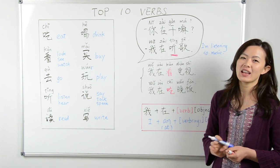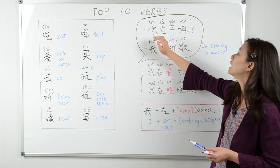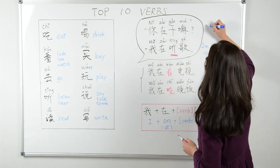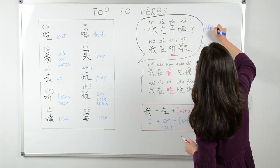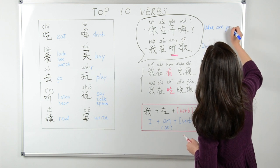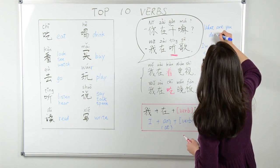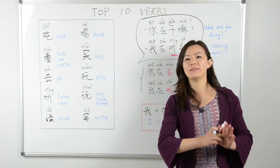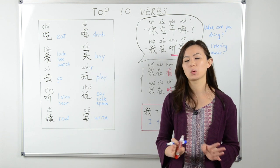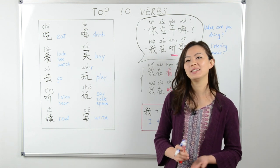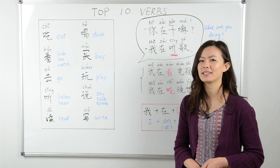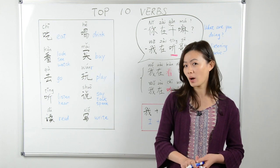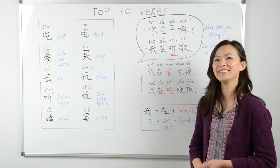Now what is the first line — the question? 你在干嘛? 你在干嘛 means 'What are you doing?' It's a very common, colloquial way to ask what someone is doing, often used as small talk between close friends. 你在干嘛? 我在听歌。